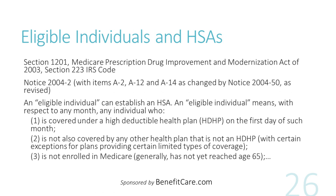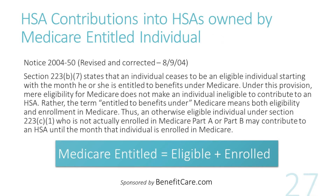So, who is an eligible individual? Section 1201 of the Medicare Prescription Drug Improvement and Modernization Act of 2003 added Section 223 to the Internal Revenue Code, permitting eligible individuals to establish health savings accounts. According to IRS 2004 notice, an eligible individual can establish an HSA if they are covered by a high-deductible health plan, not covered by any other health plan that is not an HDHP, and not enrolled in Medicare. A subsequent IRS 2004 notice clarifies that once an individual account holder is entitled to benefits under Medicare — meaning both eligible and enrolled — they can no longer contribute to their HSA. Simply being Medicare eligible does not prohibit contributions; only when an eligible individual also enrolls into Medicare and becomes entitled do contributions end.